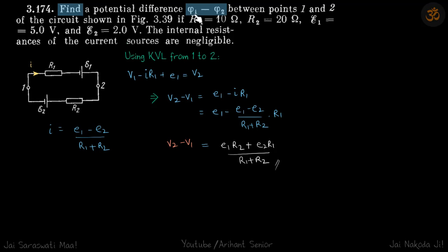We need to find the potential difference between points 1 and 2 of the circuit. We will start from point 1 and go to point 2 and let's see how the voltage varies.